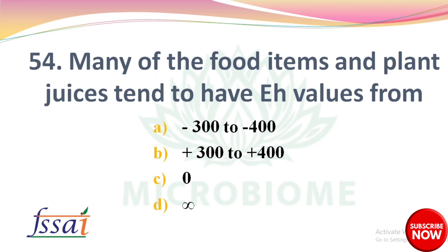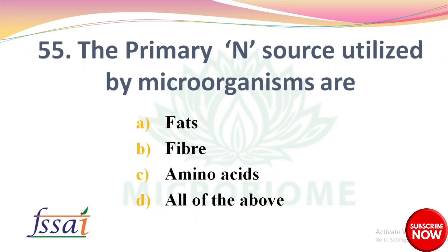Many of the food items and plant juices tend to have Eh values from which range? Options: A) -300 to -400, B) +300 to +400, C) Zero, D) Infinity. The right answer is option B: +300 to +400. The primary N-cells utilized by microorganisms are? Options: A) Fats, B) Fiber, C) Amino acids, D) All of the above. The right answer is option C: Amino acids.